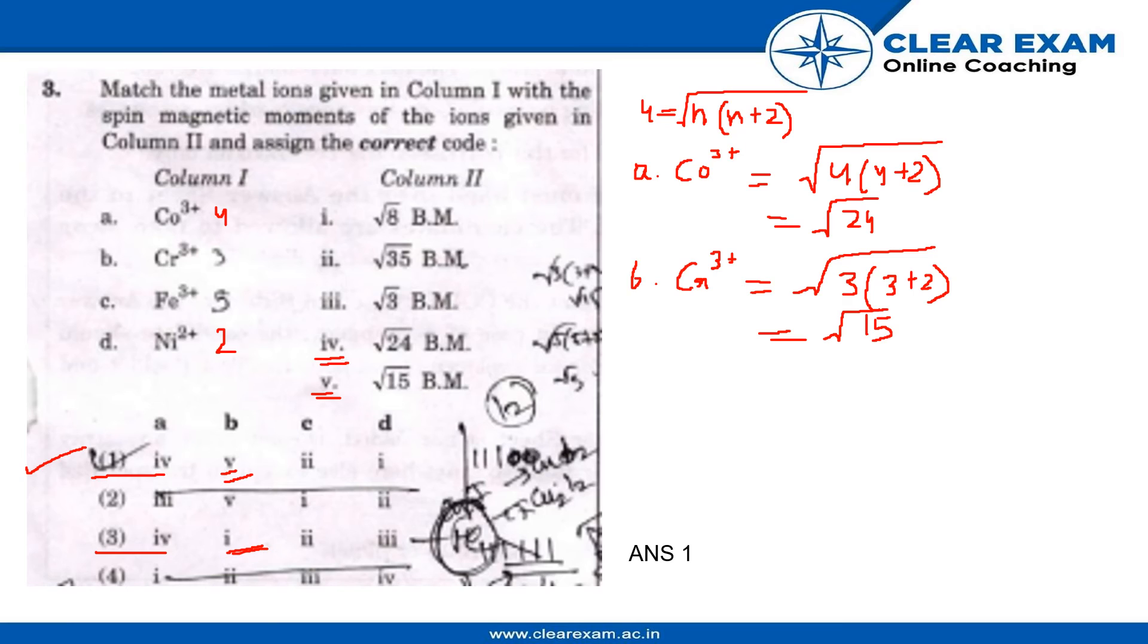Now we'll calculate for Fe³⁺. Number of unpaired electrons are 5, so 5 times (5 plus 2). Magnetic moment will be under root 35. For nickel, it will be 2 times (2 plus 2), which is 8. Nickel will match this, Fe³⁺ will match this, so the answer is option 1.